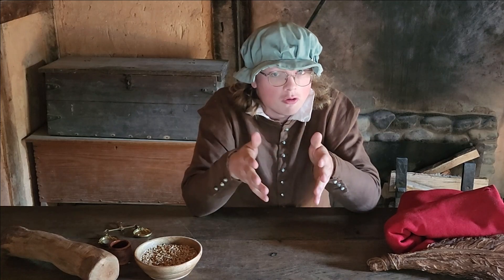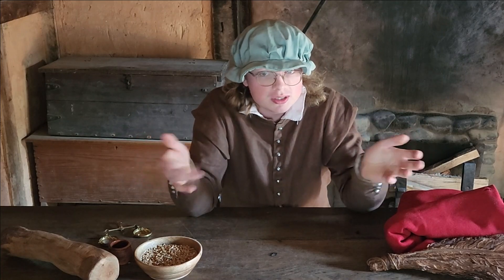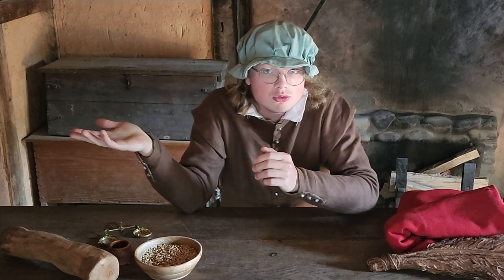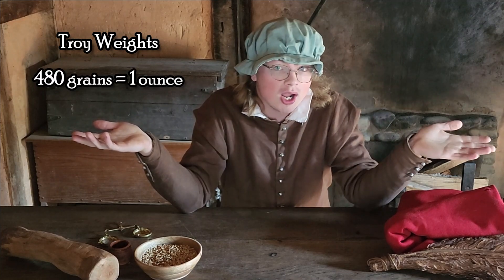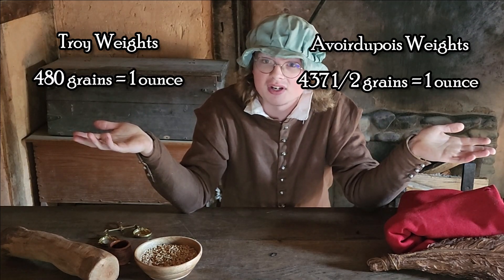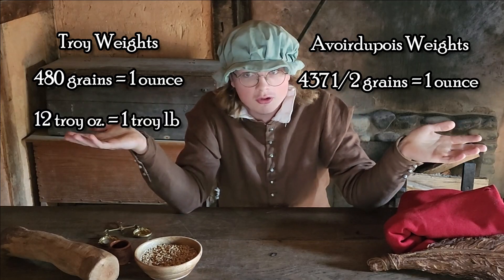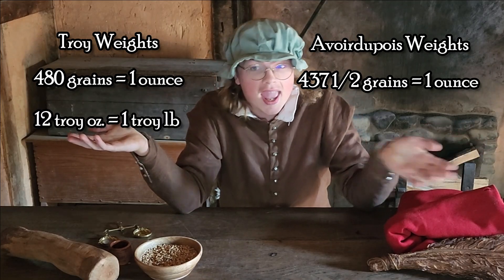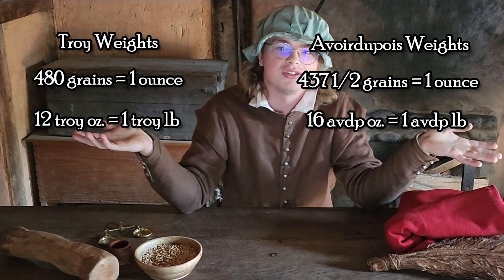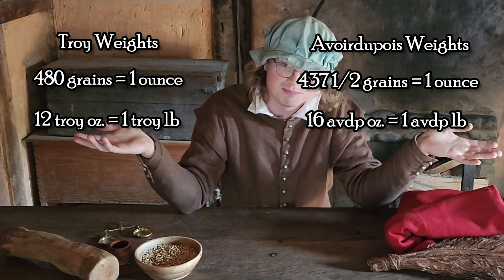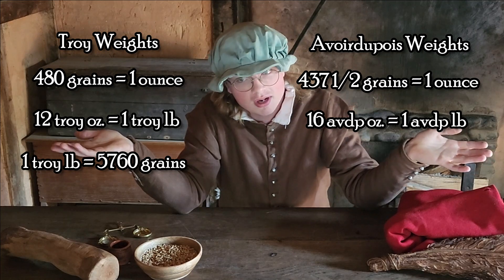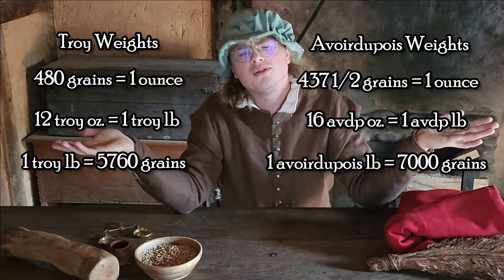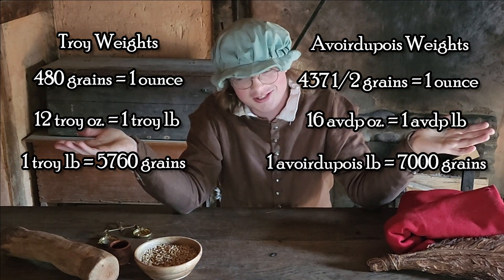With the Troy Grain as the base unit of both systems of measurement, the Troy ounce was 480 grains, the Avoirdupois ounce was 437.5 grains, 12 Troy ounces made a Troy Pound, and 16 Avoirdupois ounces made an Avoirdupois Pound. So a Troy Pound was a total of 5,760 grains, and an Avoirdupois Pound was a total of 7,000 grains.